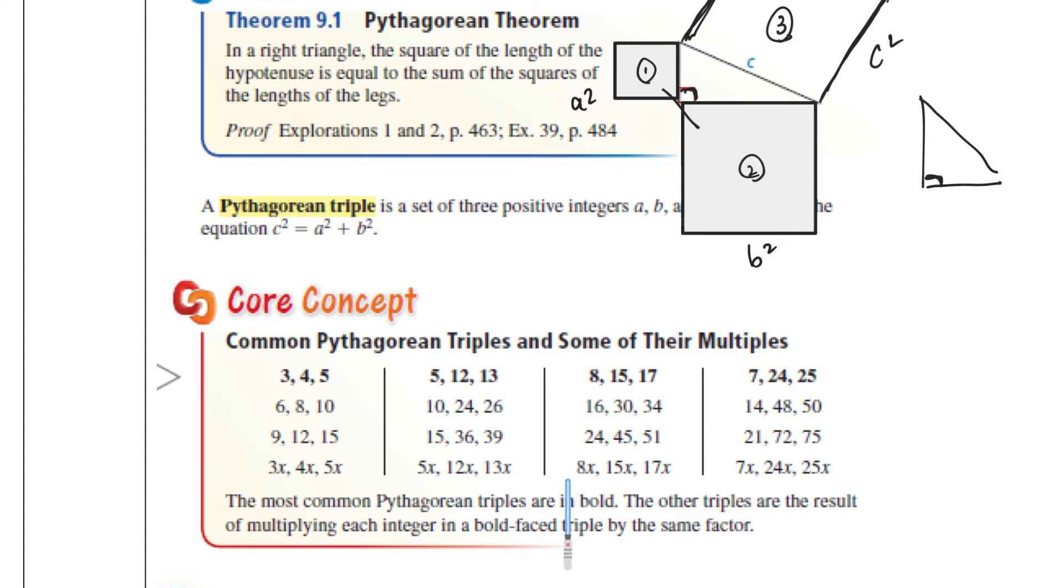Another Pythagorean triple, 5, 12, and 13, so 5x, 12x, 13x. Any of these multiples will work. 8, 15, 17, so 8x, 15x, 17x. 7, 24, 25. So there are so many other Pythagorean triples. These are the most common. You'll see 3, 4, 5, 5, 12, 13, and these other ones as well. And you just need to know any of their triples will work.